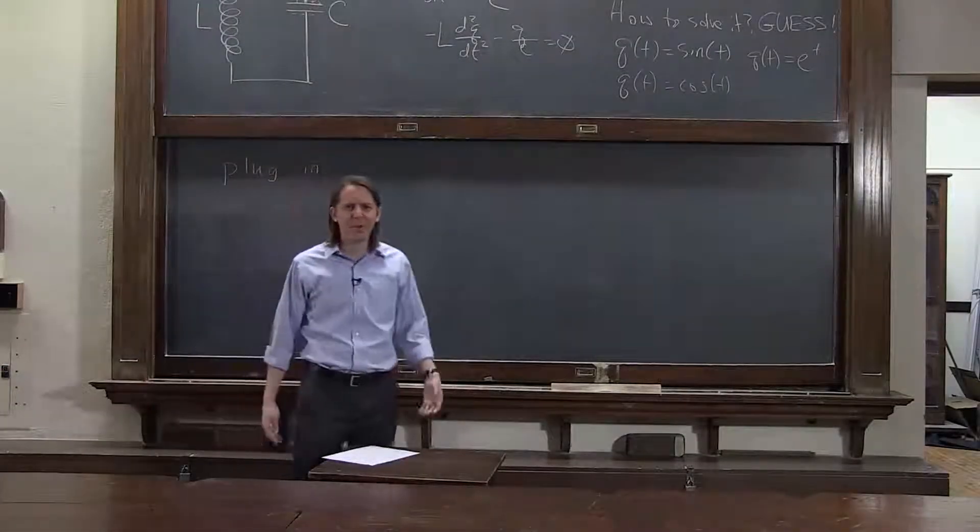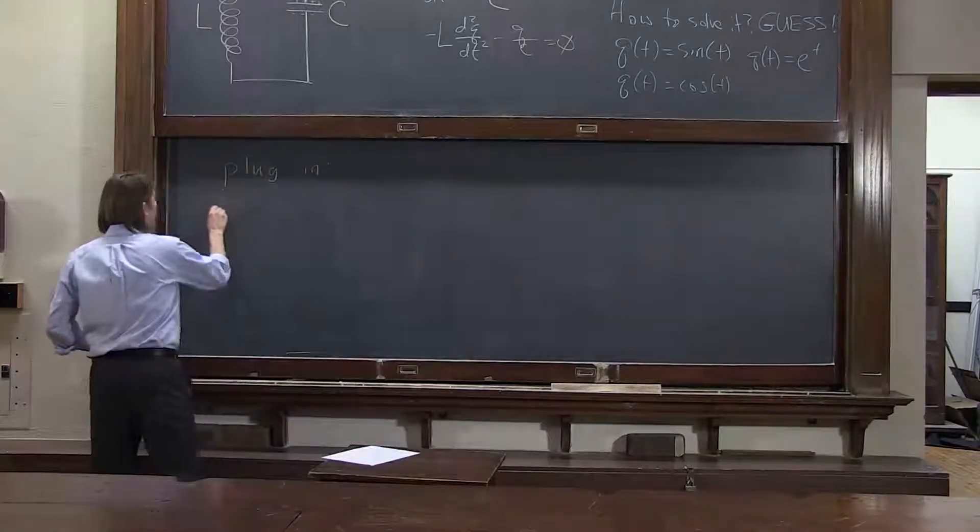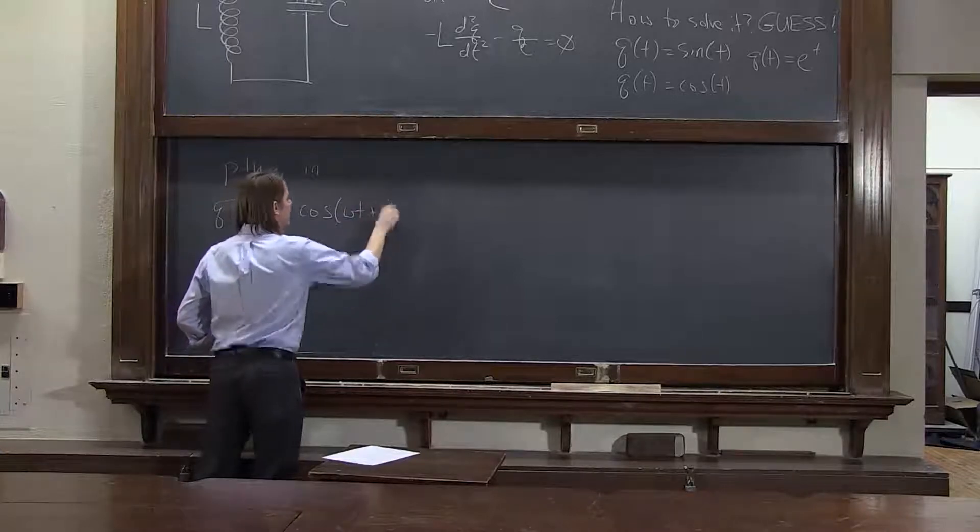And you're thinking, surely he's not going to do the cosine. I mean, we just did the—you're obviously new to the course, because now we're going to do q of t equals A cosine omega t plus phi.